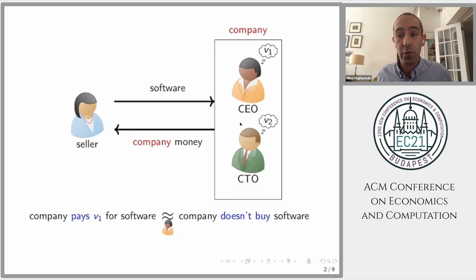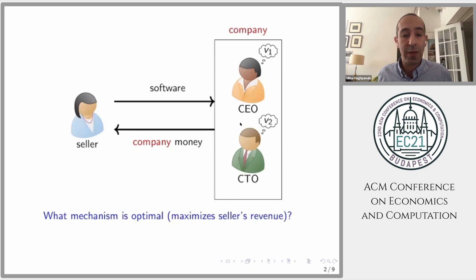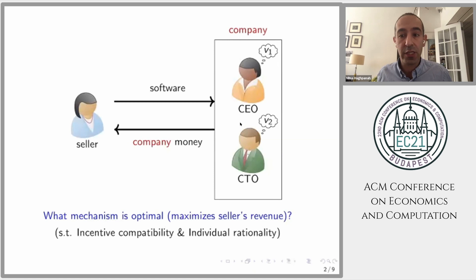Our question is: what mechanism is optimal, meaning it maximizes the seller's expected revenue? We focus on direct incentive-compatible mechanisms, where each agent reports their value, the mechanism decides whether the software is allocated and how much the group pays, and each agent maximizes utility by reporting truthfully. Utility is value times the probability of selling the software minus how much the group pays. Individual rationality means each agent's expected utility is non-negative.